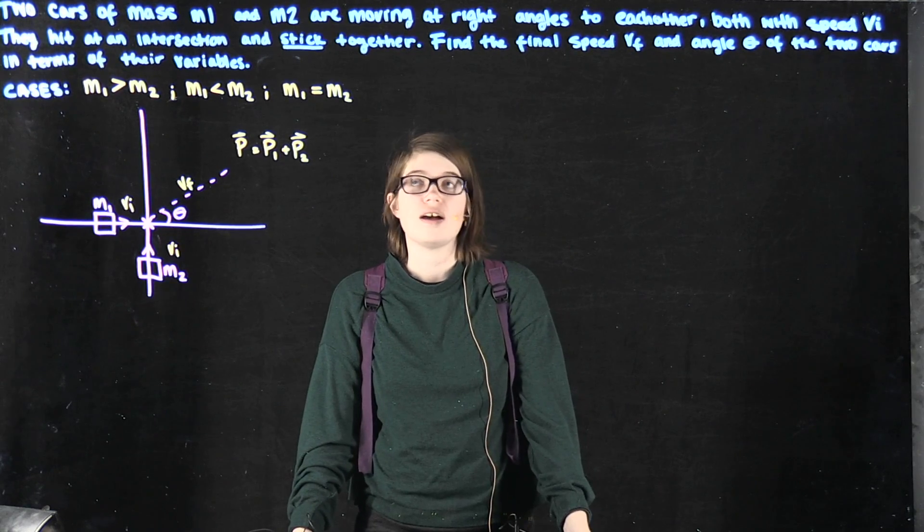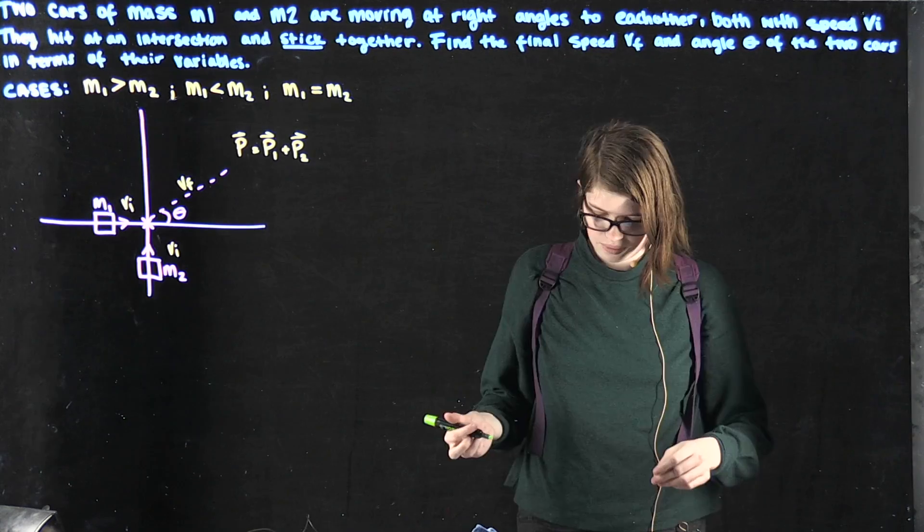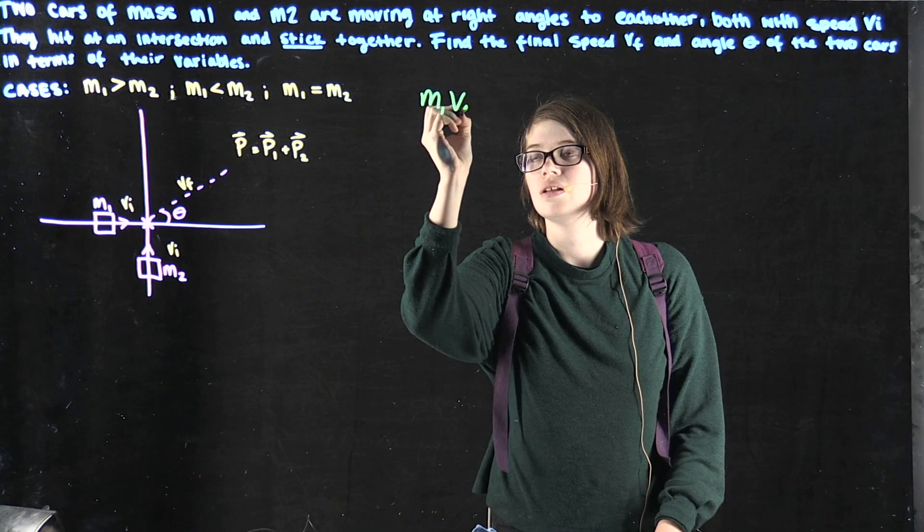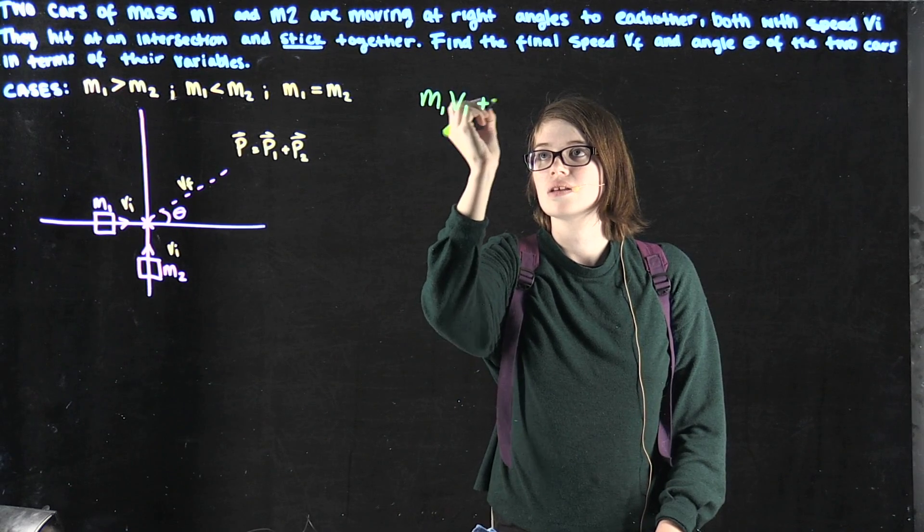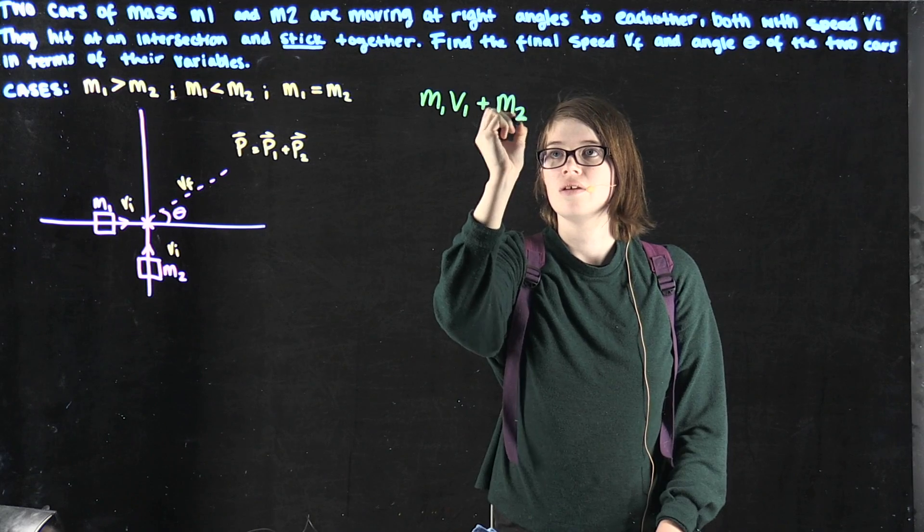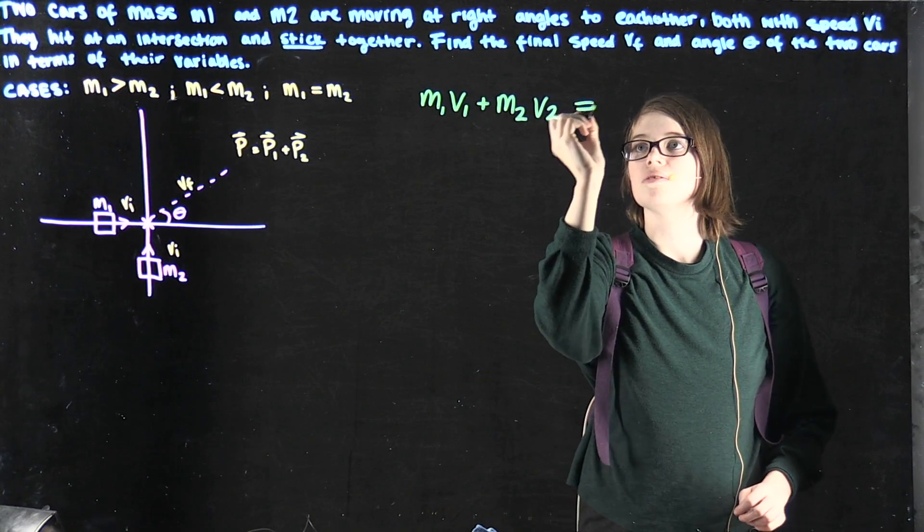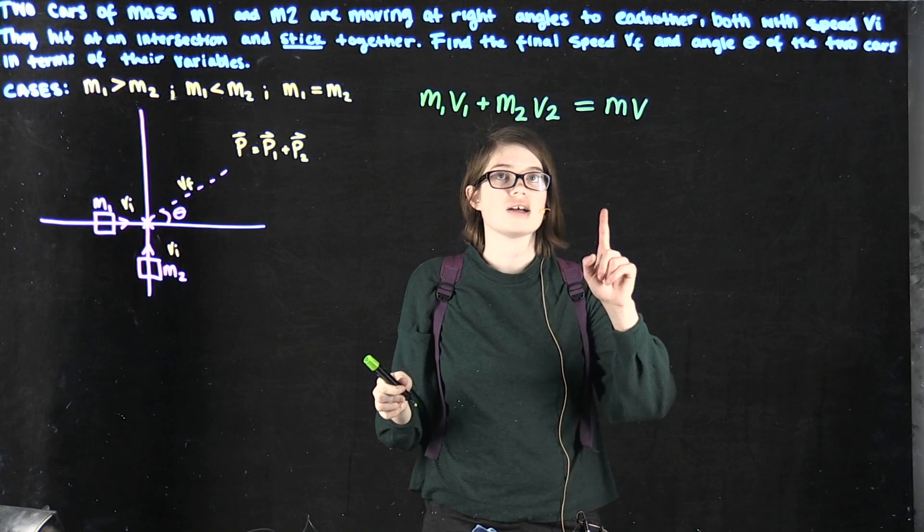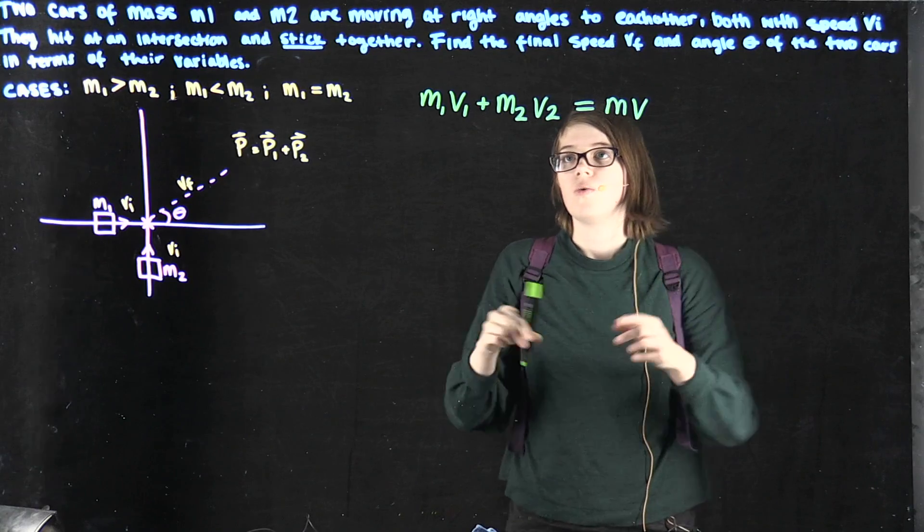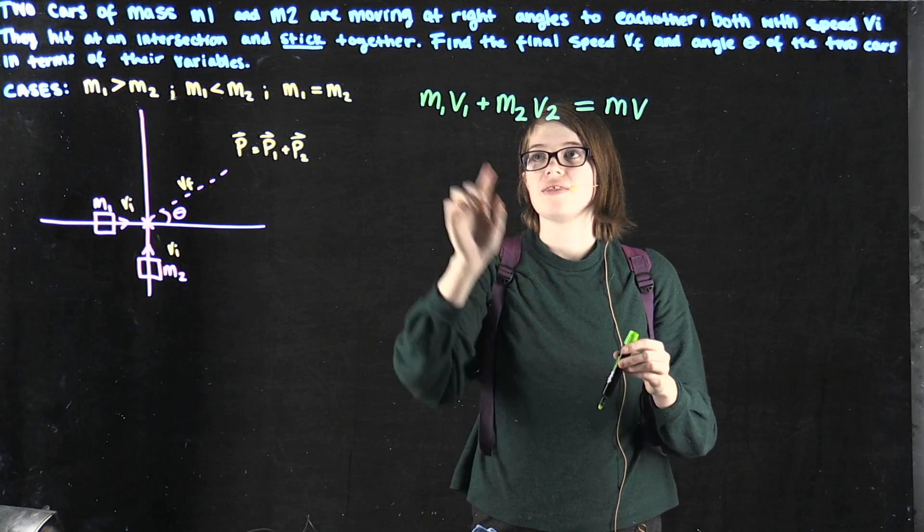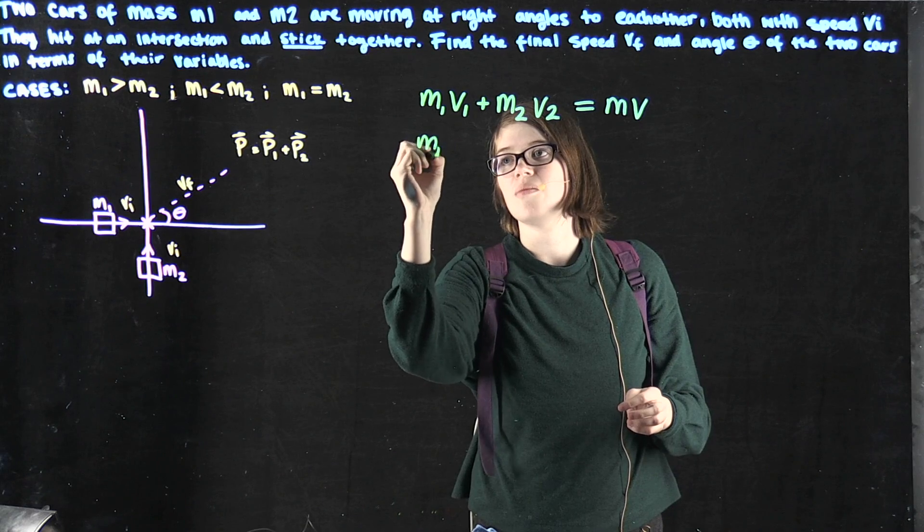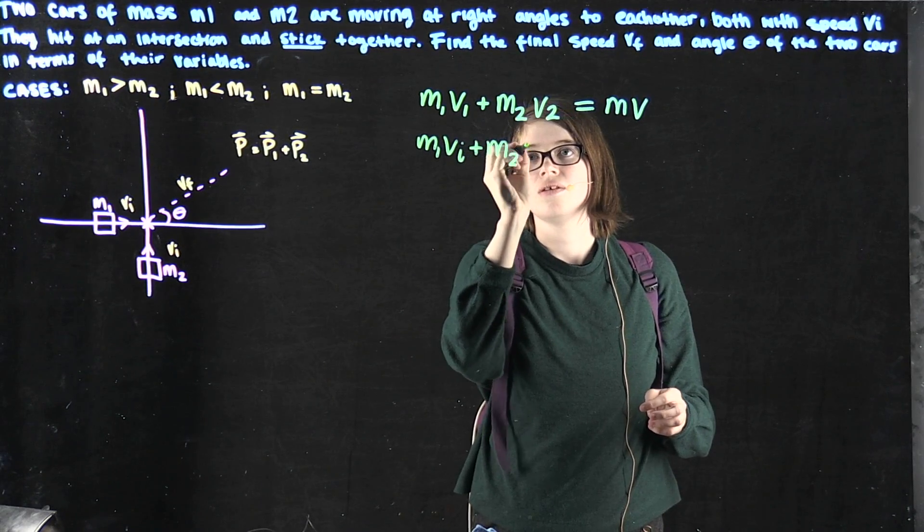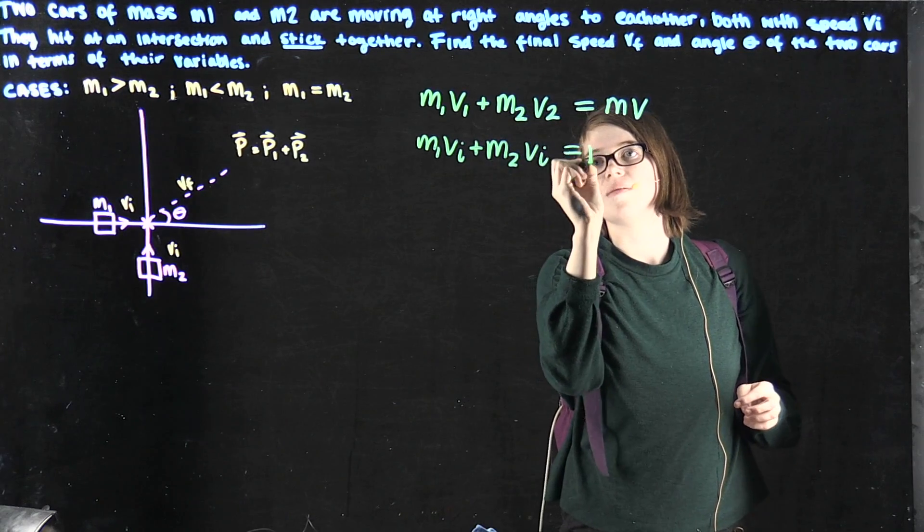Find the final speed and angle theta of the two cars in terms of the variables. The conservation of momentum equation is m1 v1 plus m2 v2 equals mv. Because the two velocities are equal to each other, we can replace this with vi, so we have m1 vi plus m2 vi equals mv.